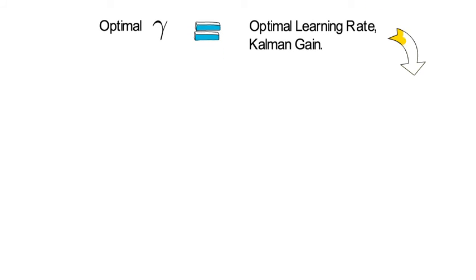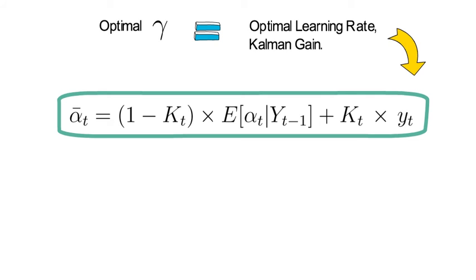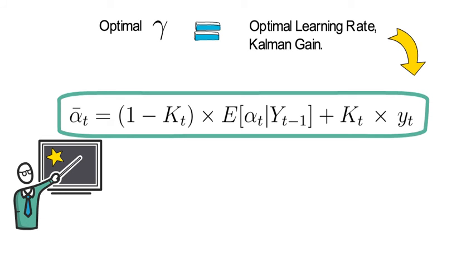This implies that the FT-MVLUE estimate for the unobserved realization of alpha t is given by the following expression: alpha-bar-t equals 1-kt times the conditional expectation of alpha t as of YT-1 plus kt times the measurement in t, where k is between 0 and 1. This representation is also of interest in its own right: kt times the measurement plus 1-kt times the FT-1 measurable MVLUE.